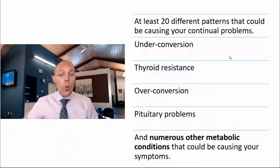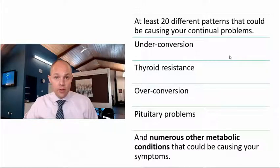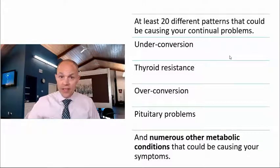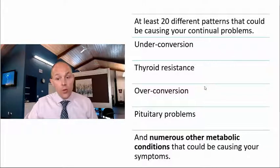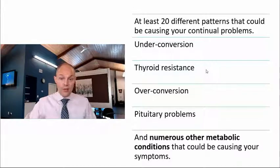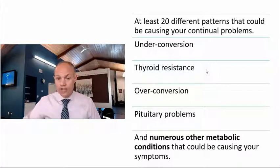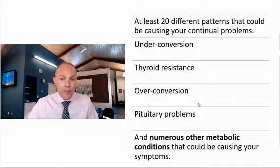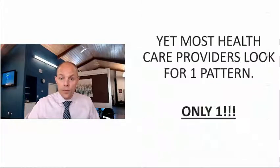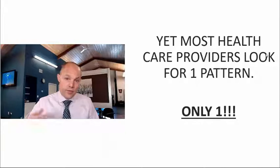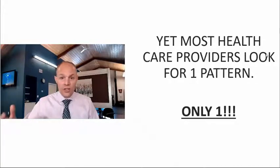When you get all 10 markers, there are 20 different patterns within those markers. With 20 different patterns, different things can be going on beyond just a low TSH. There can be over-conversion of the hormone, under-conversion, resistance at the cellular level, or problems in the brain at the pituitary level. We don't know what could be going on if we don't run all 10 markers. Not to mention there are numerous other conditions and metabolic disorders that can mimic a thyroid problem, but we only look for one to two markers, and you end up on this merry-go-round.